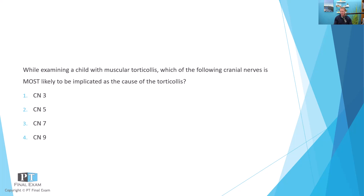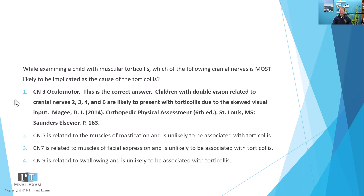So then you have to say: which one is it? Is it cranial nerve three — oculomotor — cranial nerve five — trigeminal — cranial nerve seven — facial — or cranial nerve nine — glossopharyngeal? The correct answer here is cranial nerve number three, oculomotor.